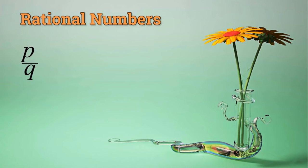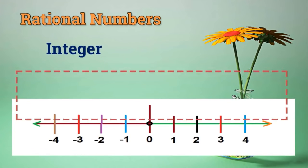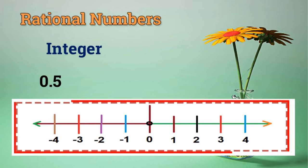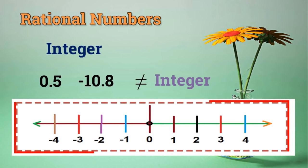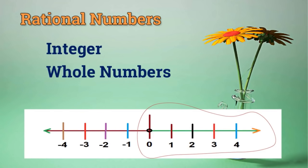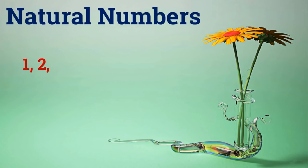Rational numbers can be further classified. Integers are all numbers on the number line that do not have any fraction — not 0.5 or minus 10.8. Whole numbers are from 0 to all positive numbers on the number line, also without any fraction. Natural numbers are all positive numbers except 0 — like 1, 2, 3, 4, 5, 6, 7, 8 — these are all natural numbers.